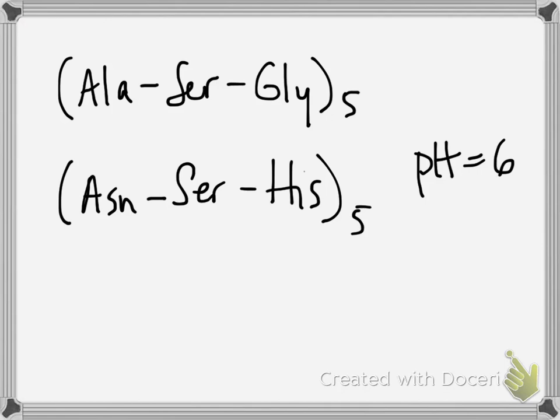So which peptide is going to be more polar? Well, right off the bat, I'm going to cross off alanine because it doesn't have an R-group that's polar or ionizable. Neither does glycine. Now I'm also going to cross off serine because it's in both peptides, so if it's in both peptides, it's not going to have an influence in one that's not seen in the other.